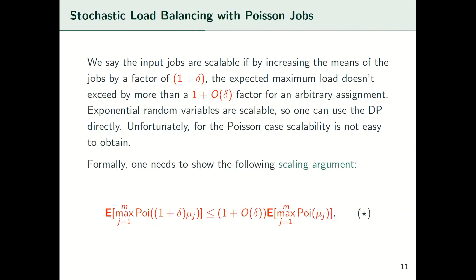This idea works well for exponential jobs and implies a PTAS. But why does it work for exponential distributions and how can we use the same reasoning to reach a PTAS for the Poisson case? When we scale the mean of an exponential random variable by 1 plus delta, the random variable itself does not increase by more than a 1 plus delta factor. As a result, by scaling the means, the expected maximum won't increase by more than a factor of 1 plus delta. Let's call this property scalability.